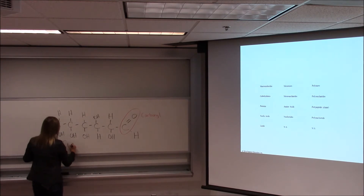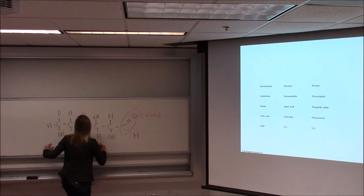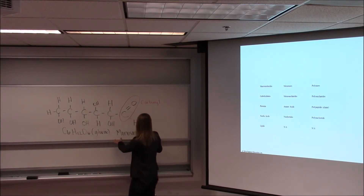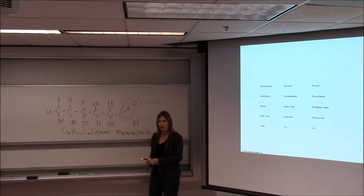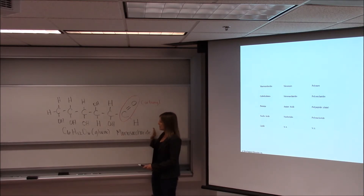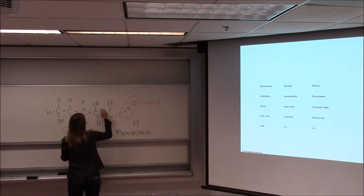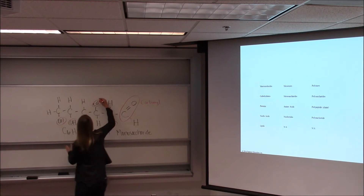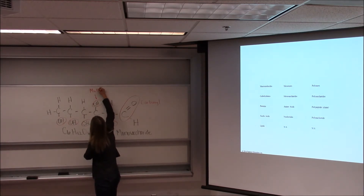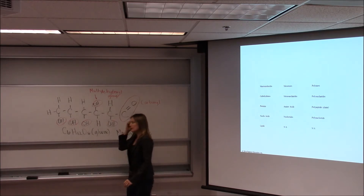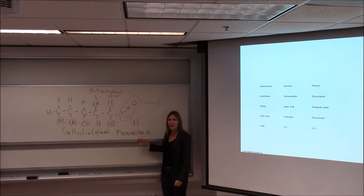This is C6H12O6 — glucose. Glucose is an example of a monosaccharide, and this would be a monomer for carbohydrates. Monosaccharide is the general term for monomers that are carbohydrates, and glucose is a specific example. We also have a second way to recognize this as a carbohydrate: we have multiple hydroxyl groups. Remember, hydroxyl groups are the OH. Multiple hydroxyl groups combined with the carbonyl group tell us this is a carbohydrate — specifically a monosaccharide.